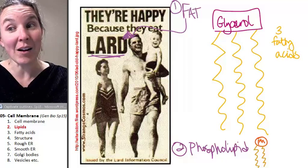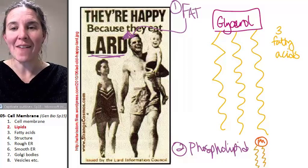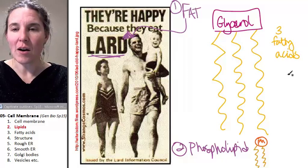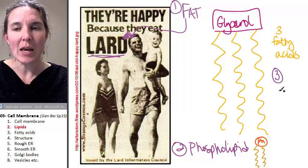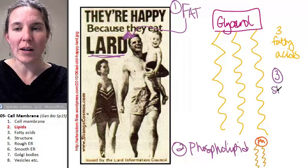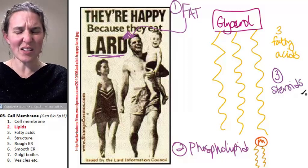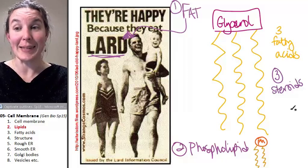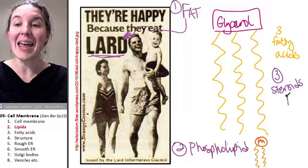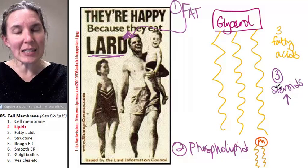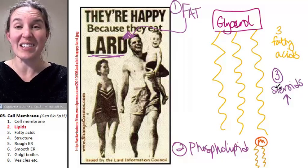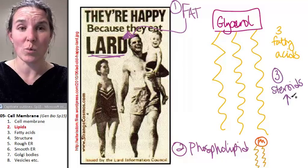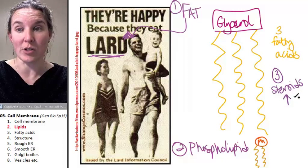But that's not all — we have another category of lipids, and this is the steroid category. Steroids are lipids? Yeah. Steroids are lipids. Lipids are essentially defined by the fact that they're hydrophobic — they don't like water — which makes complete sense if you think about salad dressing.